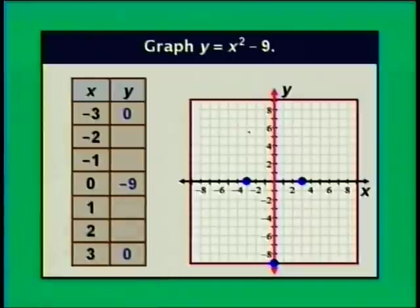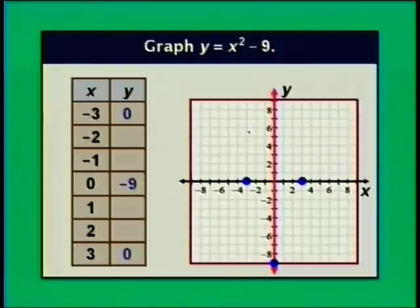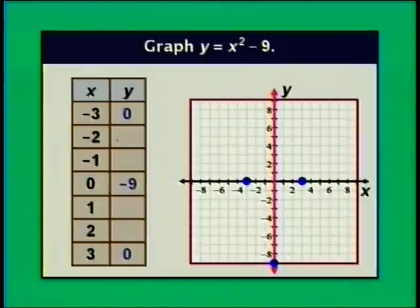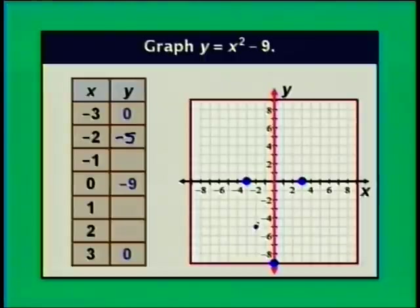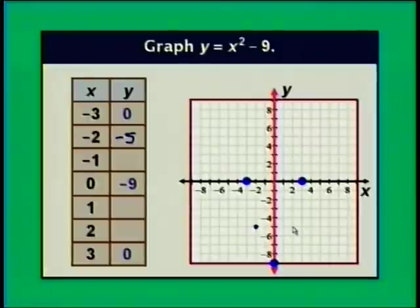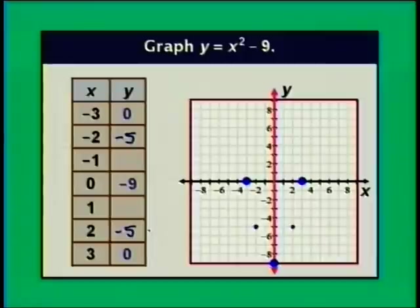Let's find more points on this parabola. When x is negative 2: y is negative 2 squared minus 9, that's 4 minus 9 equals negative 5. So (negative 2, negative 5) is on the parabola. This point is two units to the left of the axis of symmetry, so the symmetric point (2, negative 5) is also on the parabola. Checking: 2 squared minus 9 equals 4 minus 9 equals negative 5. Confirmed.